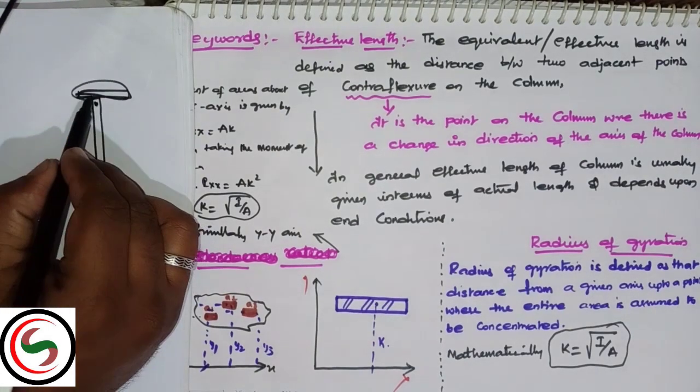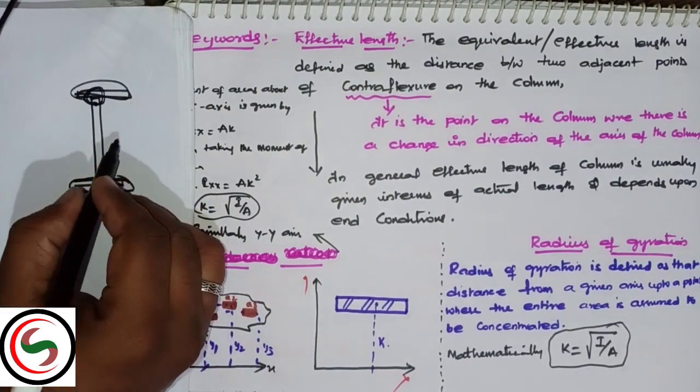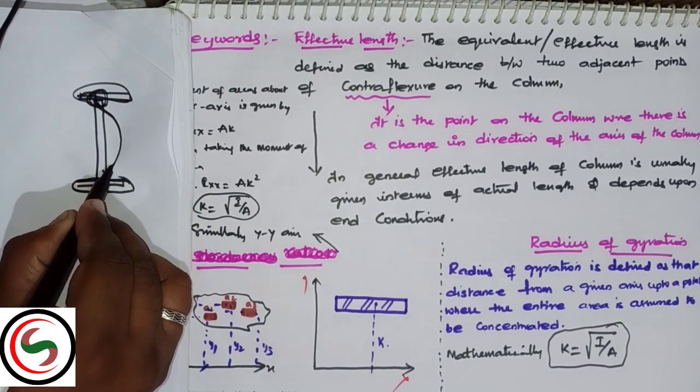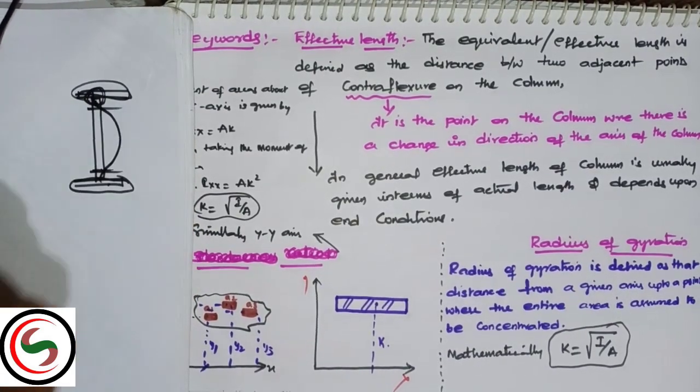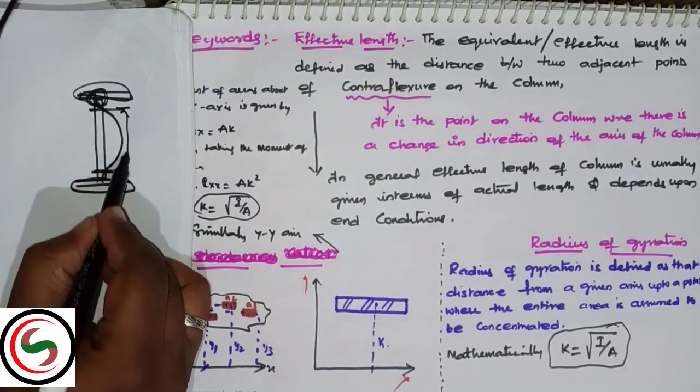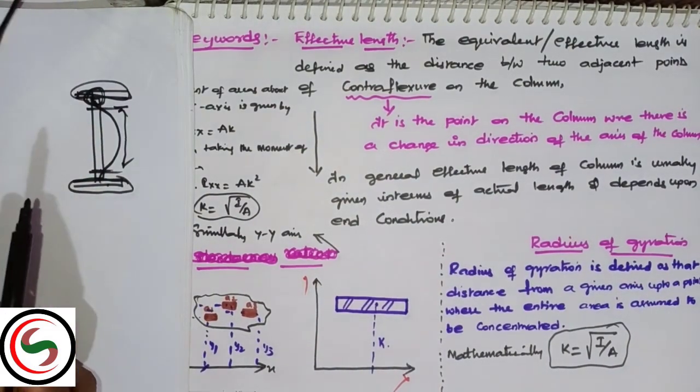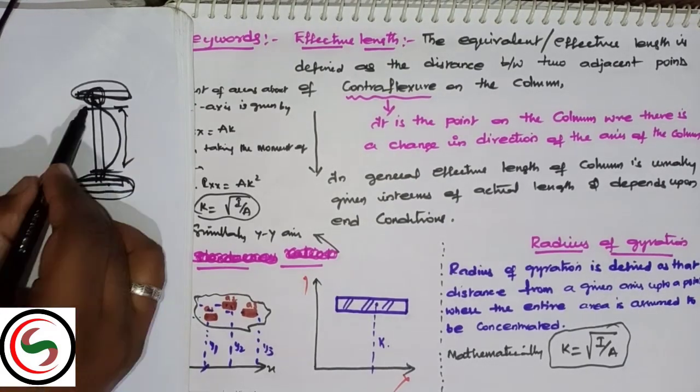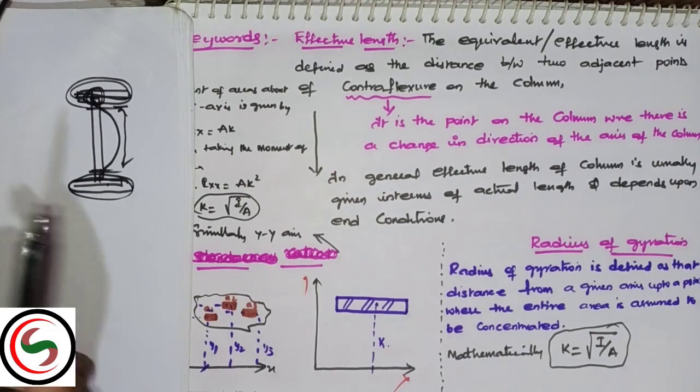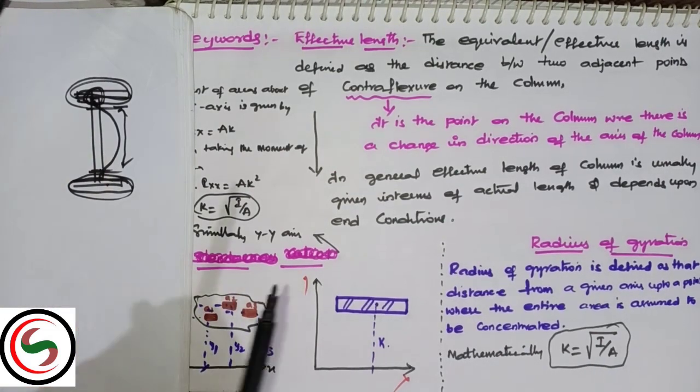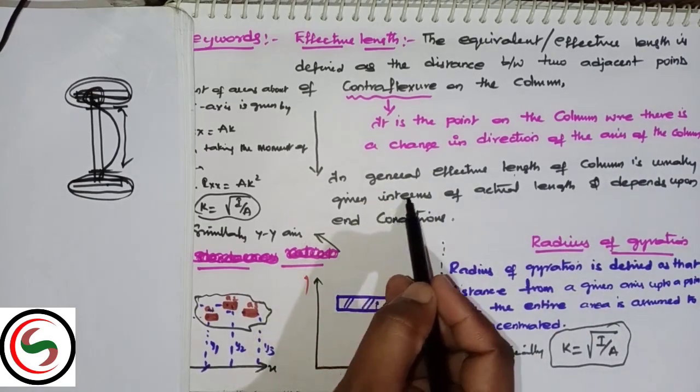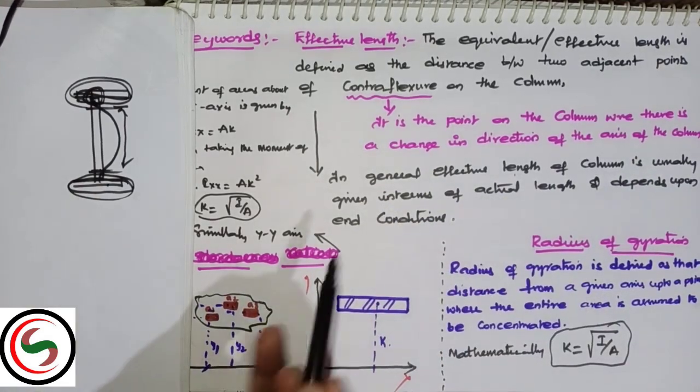Generally, the point of contraflexure is where the bending moment changes its sign. Here at the support, the bending moment will be zero, and from here it will be trying to start like this. So the distance between these points is called the effective length. The effective length depends on the boundary conditions or end conditions.